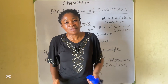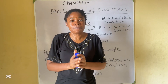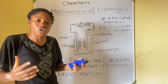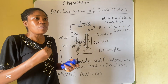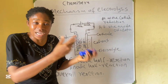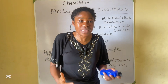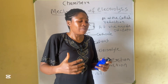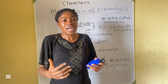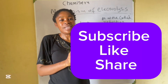That brings us to the end of today's lesson. In the next lesson, I will be discussing preferential discharge of ions — which ions will be preferentially discharged during electrolysis — and some examples of electrolysis such as electrolysis of acidified water and electrolysis of brine. Have a great day.